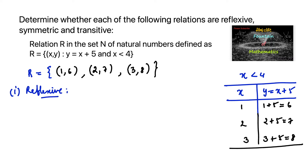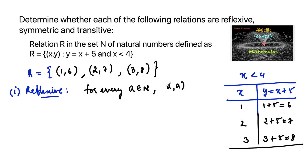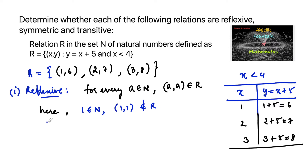The condition for reflexive is: for every a belonging to N (natural numbers), (a, a) must belong to the relation R. But here, 1 belongs to the natural numbers, yet (1, 1) does not belong to the relation R. Hence we can say R is not reflexive.